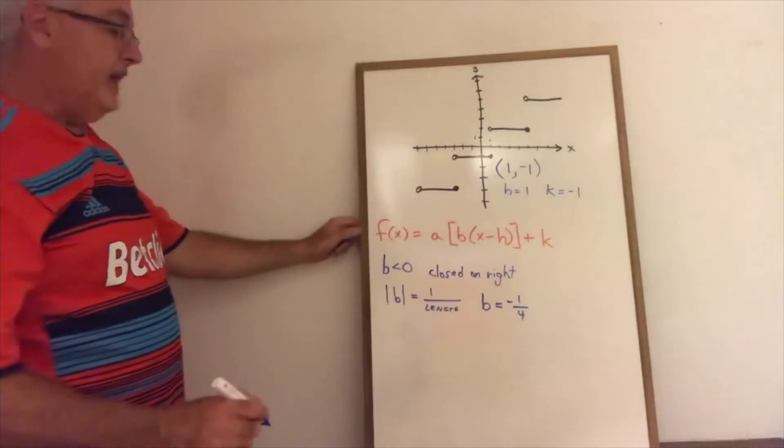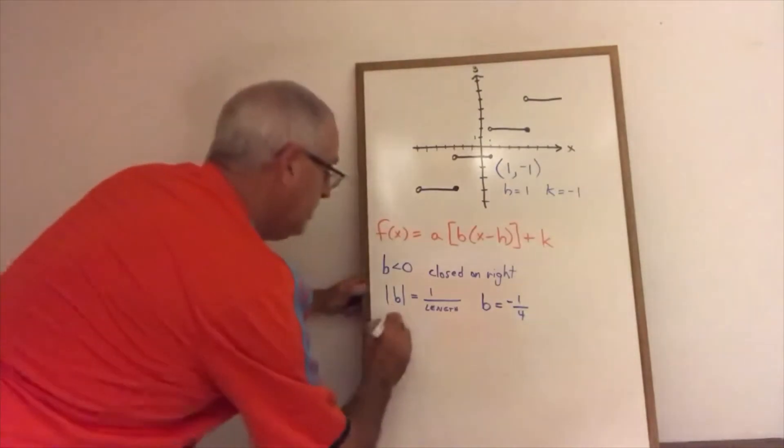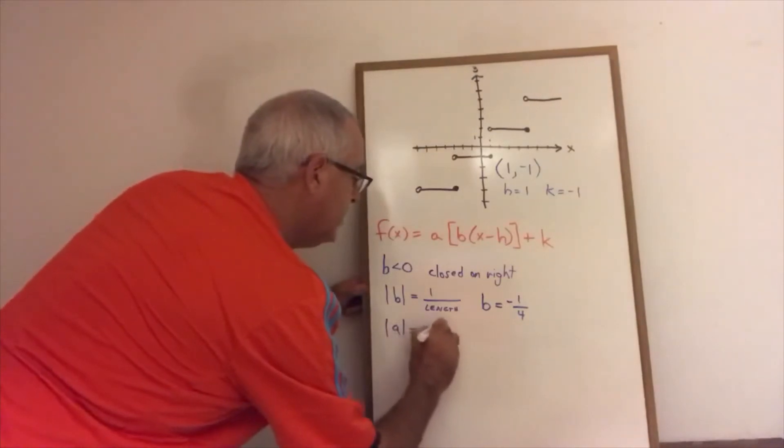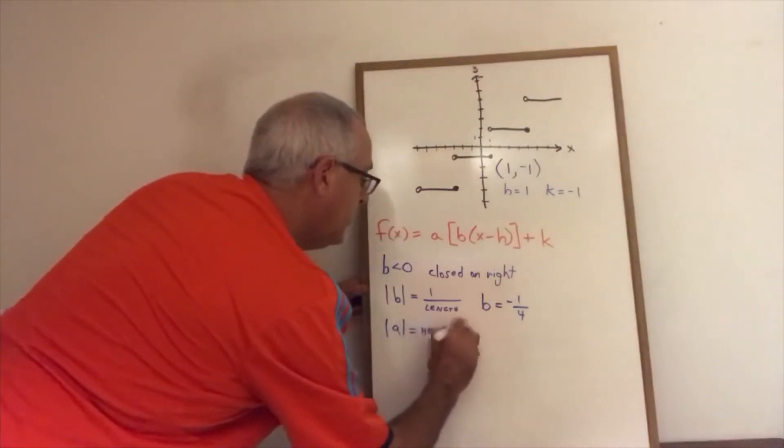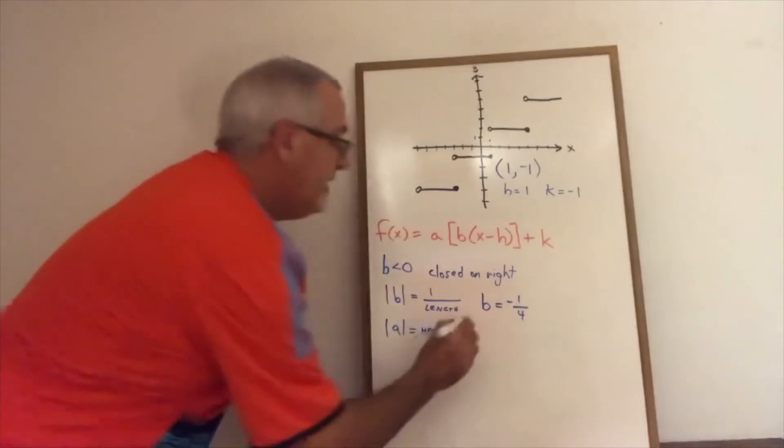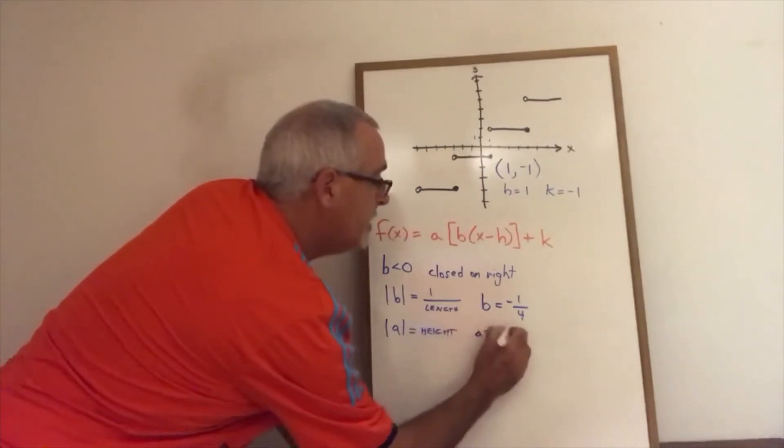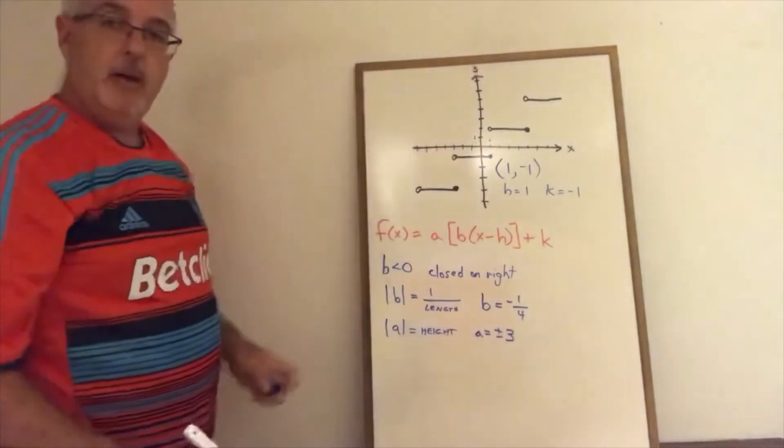Now we look at the size of a. The absolute value of a gives us the height of our steps. That means that a is equal to plus or minus 3 because our steps are 3 units in height.